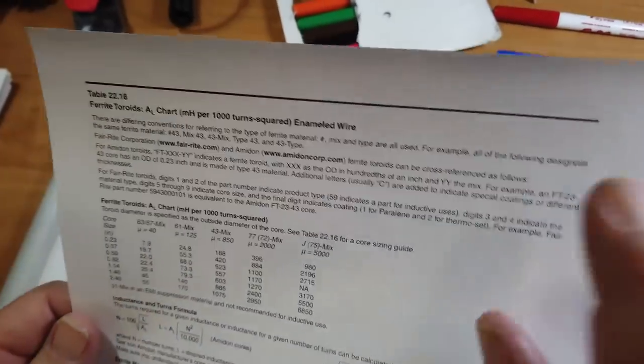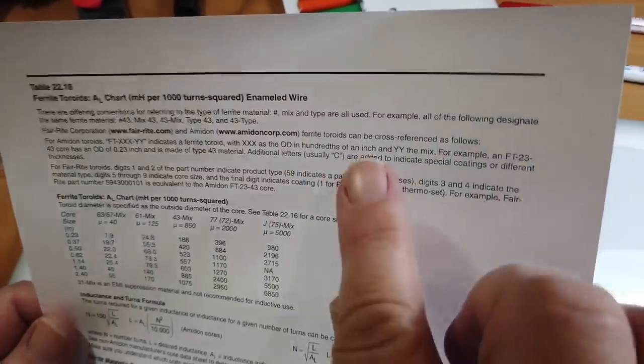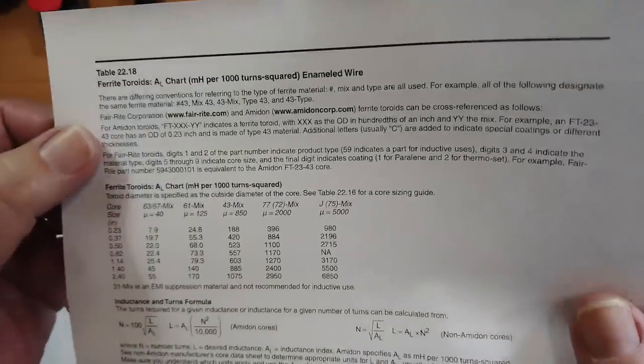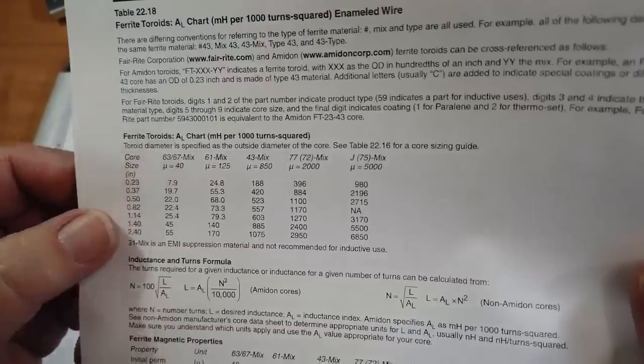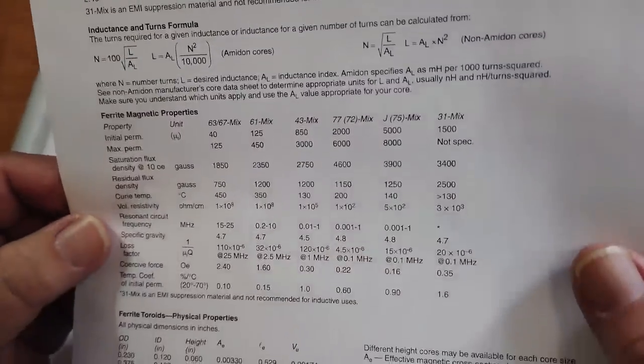Now, ferrite corporation and Amidon ferrites can be cross-referenced. And it gives you the cross-reference and all of the different kinds of things that you need for doing it. Some of the properties that you have here for the toroids. This takes a lot of study to understand the toroids. I am one to just take what they give me in the kit and wind it properly and accordingly. But other people like to wind their own chokes and so on. So anyway, there's some material in there for you to start with.